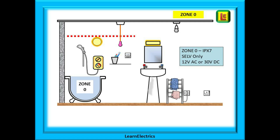Zone 0 is the space inside the bathtub — the space where the water is, up to the top of the bath; in other words, where you will be sat when you have a bath. Anything electrical in this zone must be IPX7 rated (submersible) and the voltage must not exceed 12 volts AC or 30 volts DC. It must be a SELV circuit only, and any 230 volt transformers used to supply this separated extra low voltage must be installed outside the bathroom zones, with only the ELV cables installed in the zones.